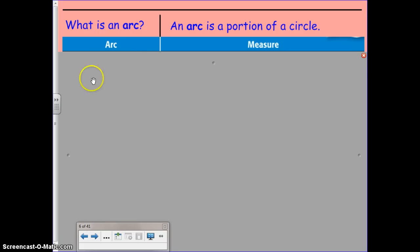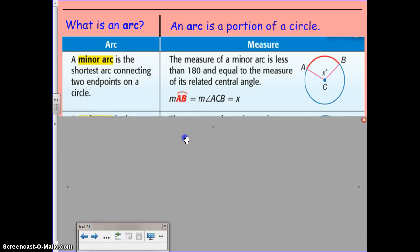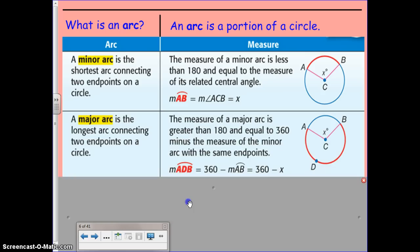Let's talk about the big terms. A minor arc is the shortest arc connecting two endpoints of a circle, and it is equal to its related angle. So this angle, angle X, would be the same as the measure of this arc angle. Minor arcs are less than 180 degrees,